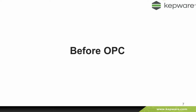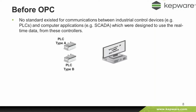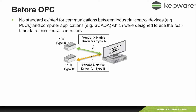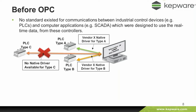Before OPC, what existed before OPC came along? If you wanted to do communications between a SCADA system and a PLC, you would go to the SCADA vendor, buy his software, install it, and use the drivers. The SCADA vendors would have a driver inside their software for PLC type A — perhaps Rockwell — and a driver for PLC type B, let's say Siemens. But if you had a third type of PLC, say Mitsubishi, and the SCADA vendor hadn't written that driver, you had a bit of a problem.